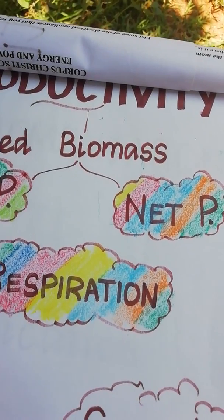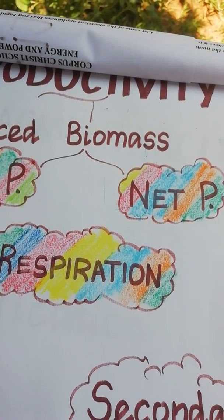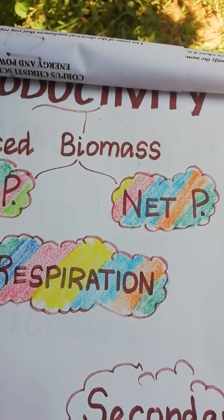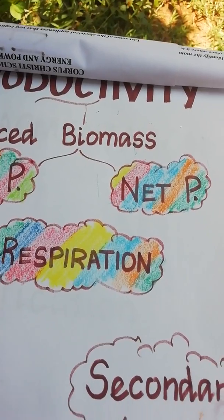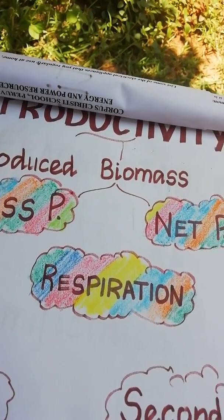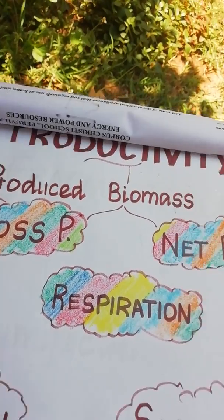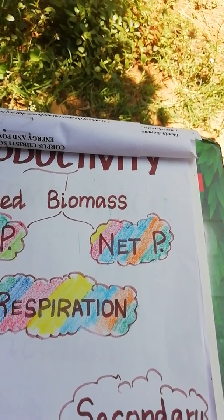This net productivity is what enters into the next trophic level. So that is what productivity — gross productivity and net productivity.